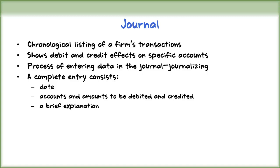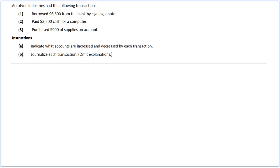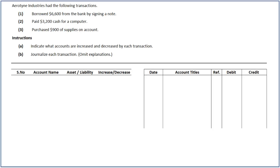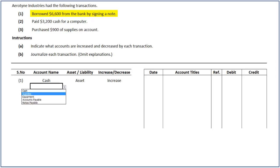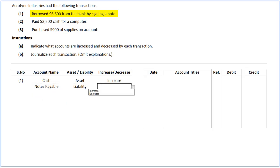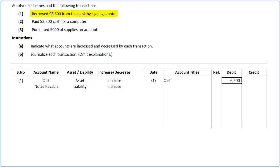Let's look at an illustration to learn how to analyze and journalize transactions. Erotine Industries has presented a few transactions from which we are required to indicate what accounts are increased and decreased in each transaction and journalize each transaction. In the first transaction, Erotine Industries borrowed $6,600 from the bank by signing a note. As cash is coming into the business, cash, an asset account, increases, and as borrowings are made by signing a note, notes payable, a liability account, increases. To record this transaction, we increase cash by debiting it for $6,600 and increase notes payable by crediting it for the same amount.